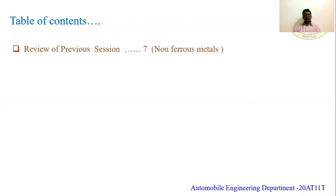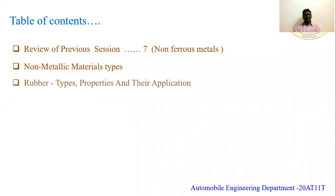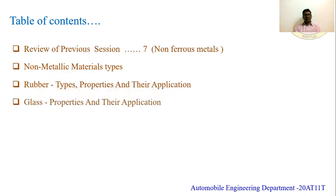The table of contents covers: first, a review of previous session 7 on non-ferrous metals; then non-metallic material types; rubber types, properties and their application; glass properties and their application; and ceramic properties and their application.